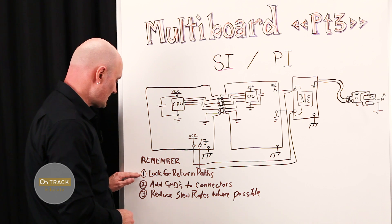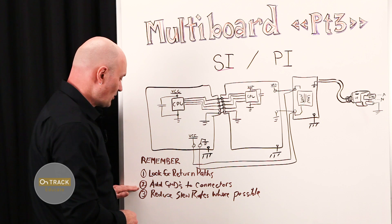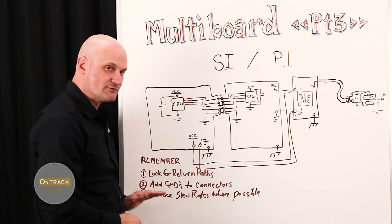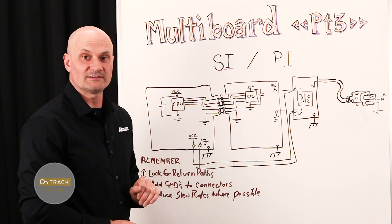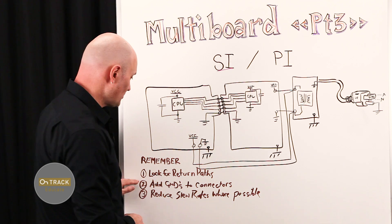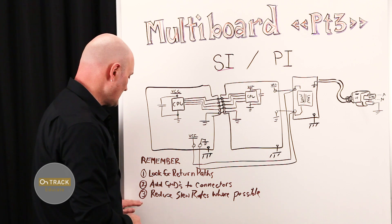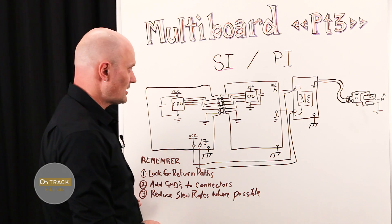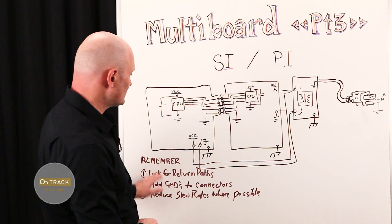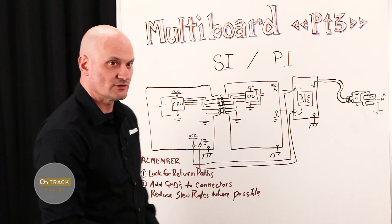So I want to talk about what are some of the common causes of those. The essential points we're going to look at today are: how to look for return paths; add more grounds than you think necessary to your board-to-board connections; and reduce slew rates where possible. Really, it all boils down to ground return path currents.